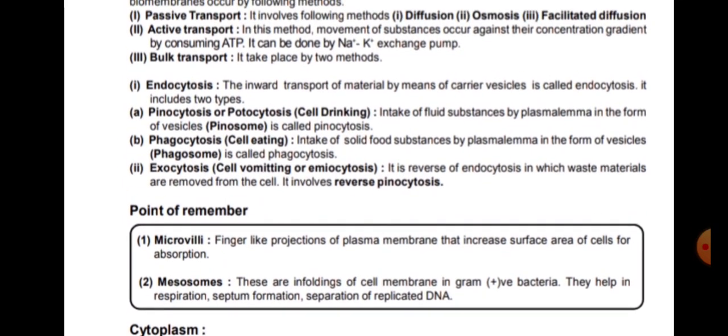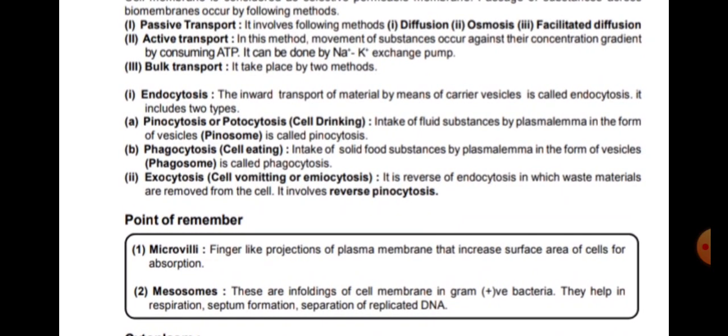Microvilli are finger-like projections of the plasma membrane that increase the surface area of cells for absorption. Mesosomes are infoldings of the cell membrane present in gram-positive bacteria; they help in respiration, septum formation (partition formation), and separation of replicated DNA during DNA replication.